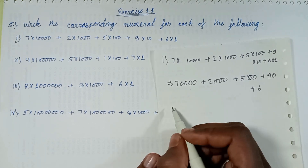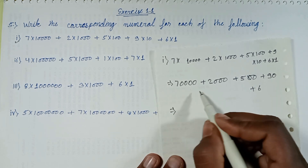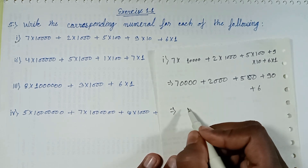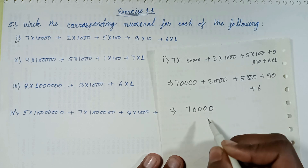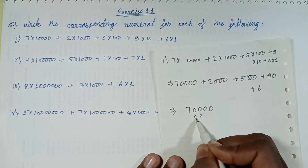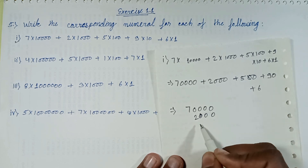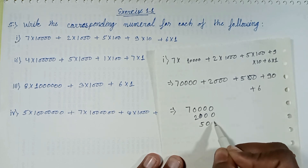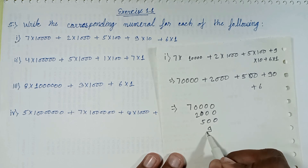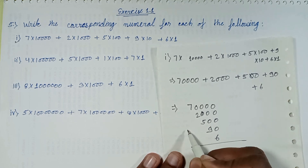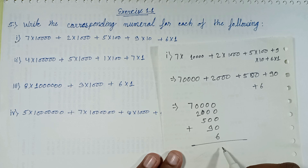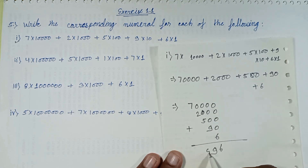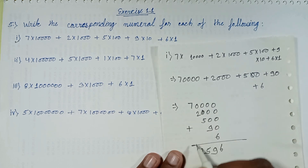Now write these numbers in vertical form. This was the horizontal form. Writing in vertical form: 70,000; 2,000; 500; 90; and 6. Adding vertically gives digits: 7, 2, 5, 9, 0, 6.